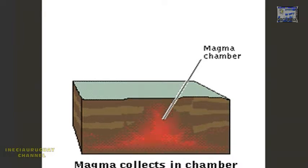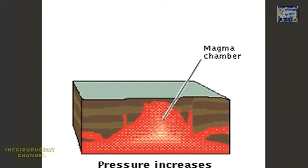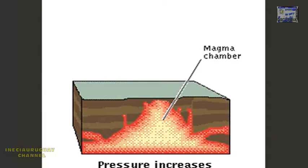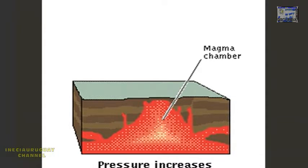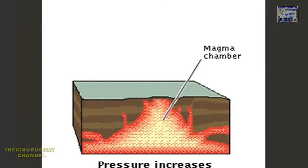Magma collects in a chamber beneath the crust. Pressure increases, forcing it up through cracks and fissures, and a conduit to the surface is created.